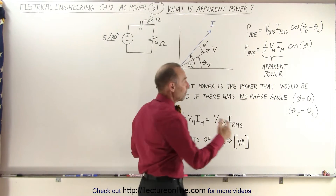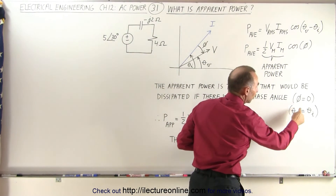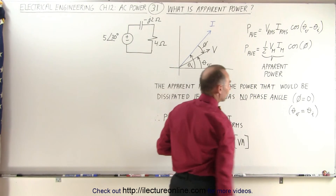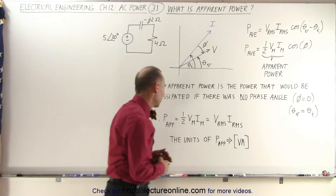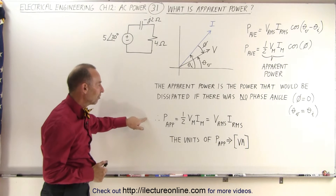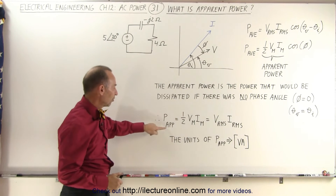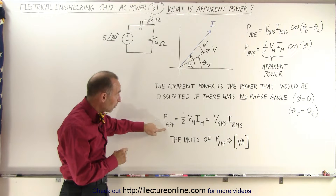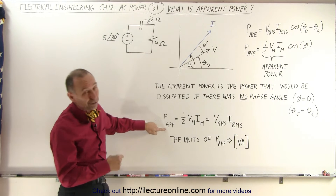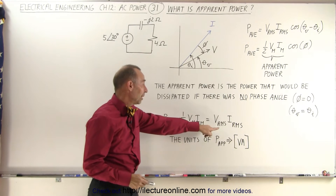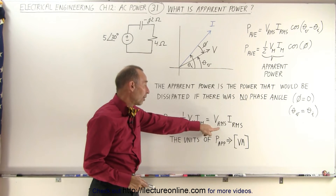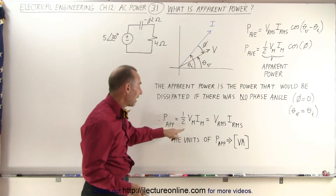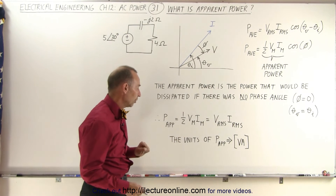In other words, the apparent power is the power dissipated when the phase angle is zero — when the phase angle of the voltage equals the phase angle of the current. This portion is what we call the apparent power, APP for apparent, and it is simply the RMS voltage times the RMS current, or one-half the maximum voltage times the maximum current.